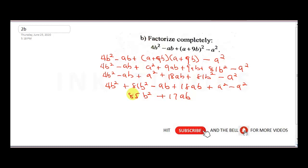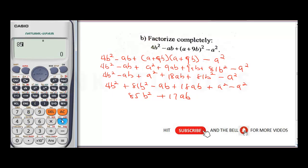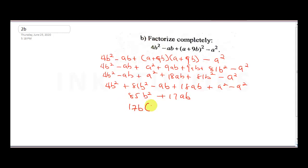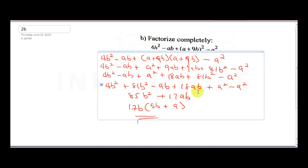Now we factorize 85b² + 17ab. We check: 85 ÷ 17 = 5, so 17 is a common factor. We also have b in common. Factoring out 17b gives us 17b(5b + a). Checking: 17b × 5b = 85b² and 17b × a = 17ab. So the final answer is 17b(5b + a).